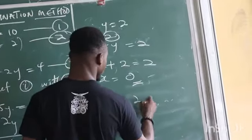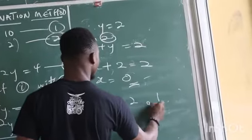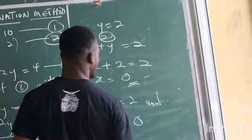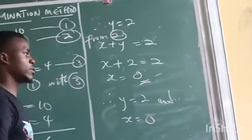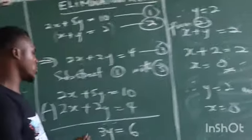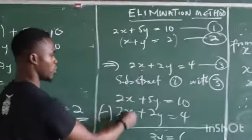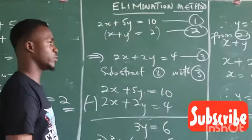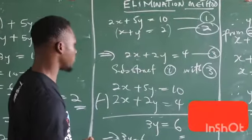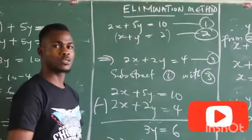Therefore, we have that y equals 2 and x equals 0. That's the elimination method. We try to eliminate one of the variables here from the elimination method. And this is the answer we got from the substitution method.